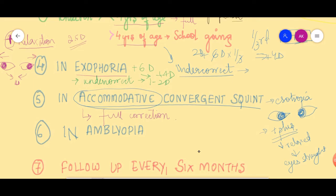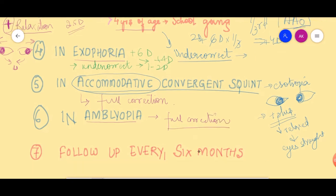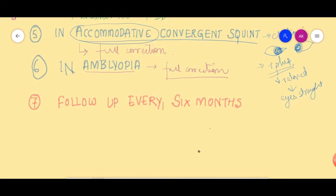If a child has associated amblyopia, we also have to give them full correction, because amblyopia is dangerous. Every patient that you prescribe must be followed up every six months, because hypermetropia is due to the smaller eyeball, and as the child grows the eyeball will increase in size. As the eyeball increases, the hypermetropic error might decrease with age, so we follow up every six months to see if the error is getting reduced.